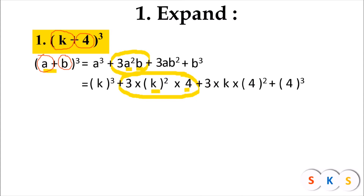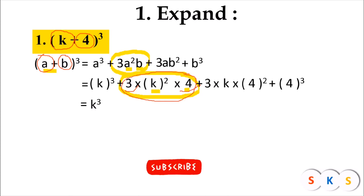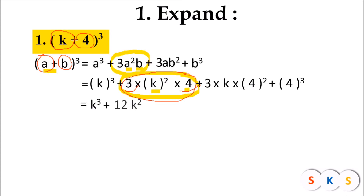Now we will go for the simplification. k raised to 3 will be k raised to 3. We will multiply here 3 with 4. So 3 into 4 is 12, and 12 into k squared is 12k squared.